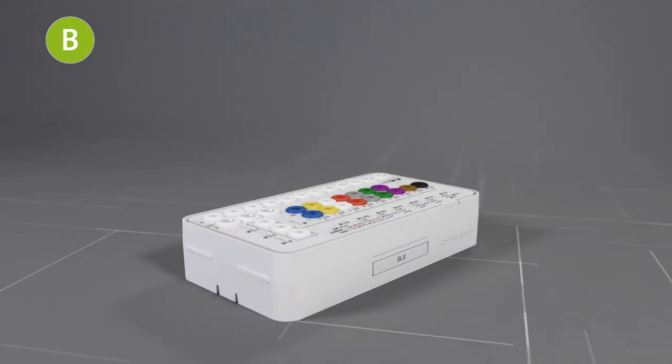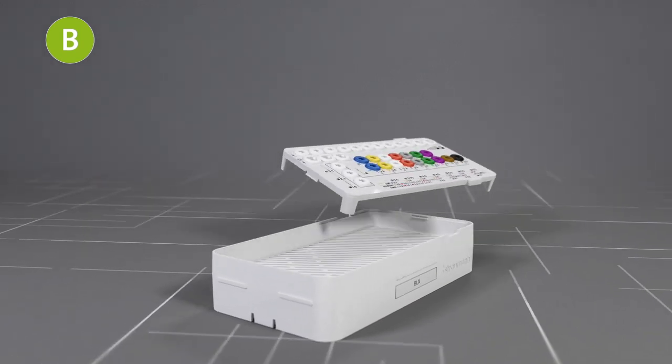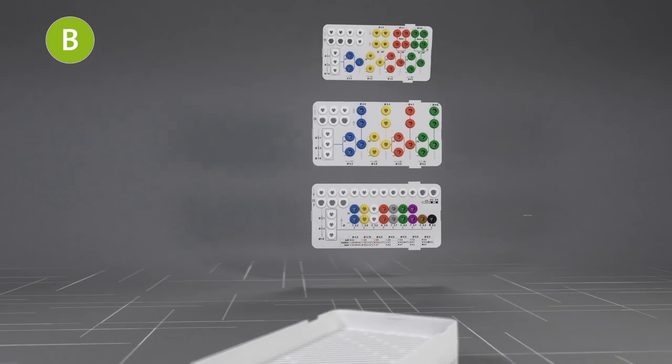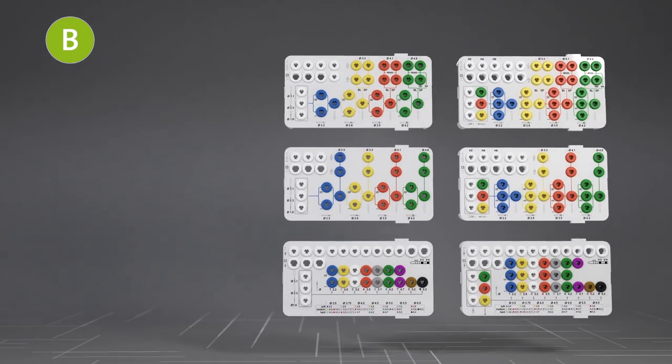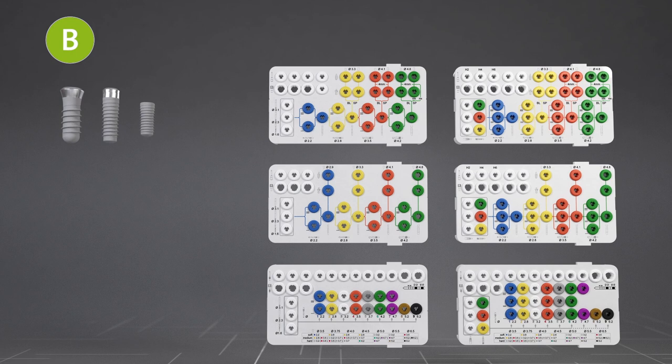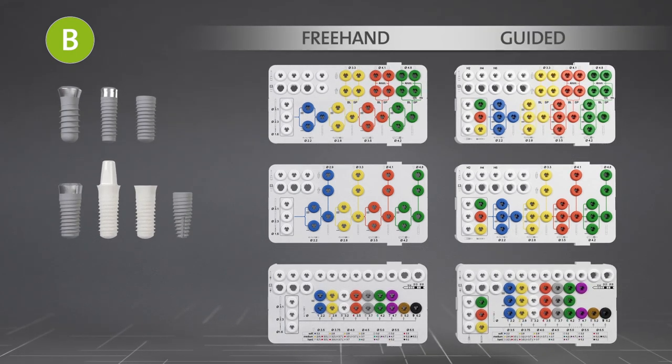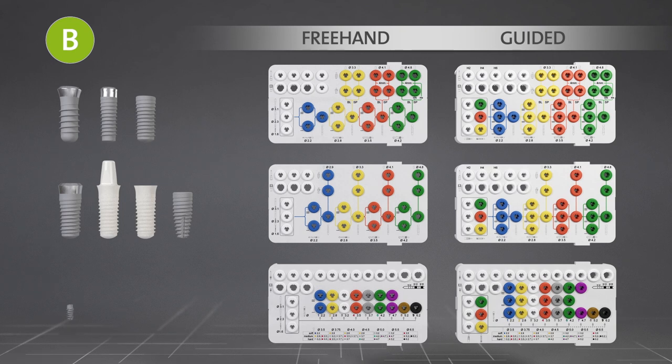Moving to the B module. The B module trays carry the surgical workflows corresponding to the Straumann implant lines. Each workflow is available in a freehand surgery and a guided surgery version.